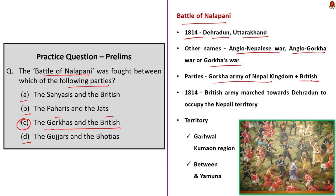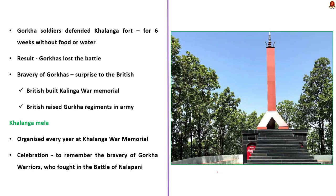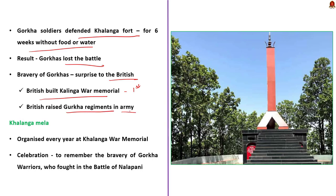During 1814, the British Army marched towards Dehradun to occupy Nepali territory situated in the Garhwal and Kumaon region, between the Ganga and Yamuna rivers. The Gorkha soldiers defended the Kalanga Fort of Nepal Kingdom for over six weeks without food or water. Despite strong retaliation, the Gorkhas lost the battle. However, impressed by their bravery, the British themselves built the Kalanga War Memorial, considered the world's first memorial erected by the British Army for their opponents. The British also raised Gorkha regiments in their army, which are still part of the Indian Army. Every year Kalanga Mela is organized at the Kalanga War Memorial to celebrate Gorkha bravery.